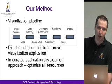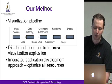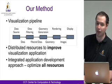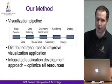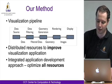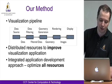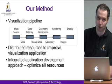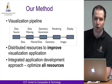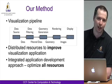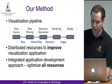Our method is based on the visualization pipeline, a common concept in the visualization world. The visualization process is described as a five-stage pipeline: the data source stage, a filtering stage for selecting data of interest, geometry generation, rendering to create actual images, and finally the display where the user sees the generated images. Our visualization system uses distributed resources to improve the application, taking an integrated approach that takes advantage of networks, storage, compute resources, and visualization resources.